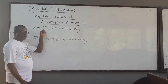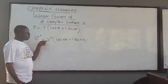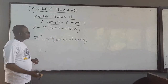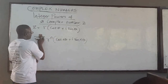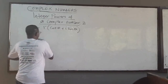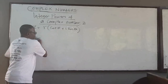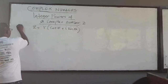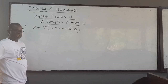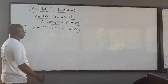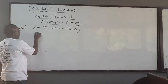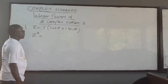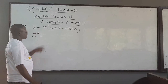What we are going to do now is basically prove this theorem, which is a very powerful theorem. So let z equal r(cos θ + i sin θ). You see that z² would be equal to z times z.